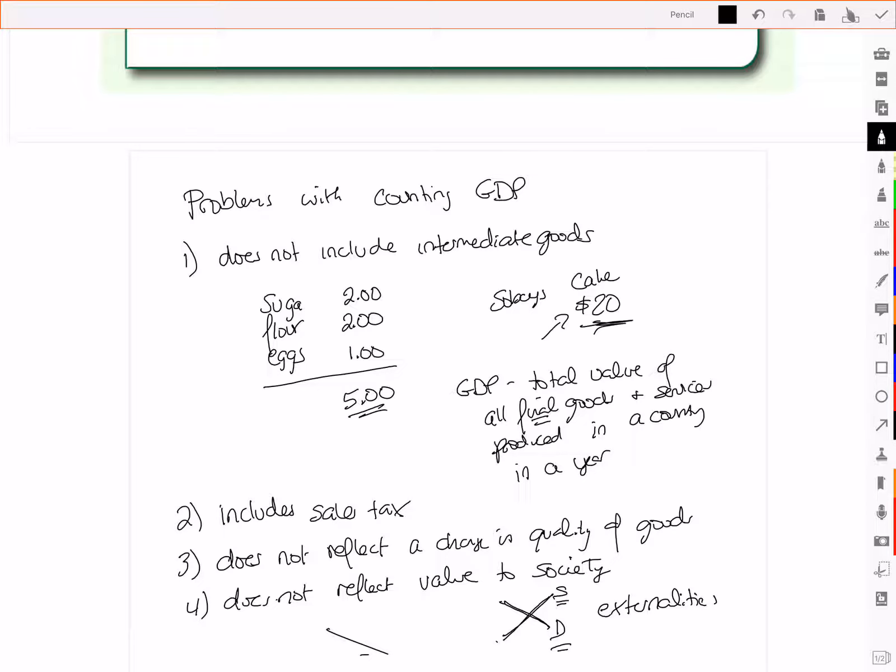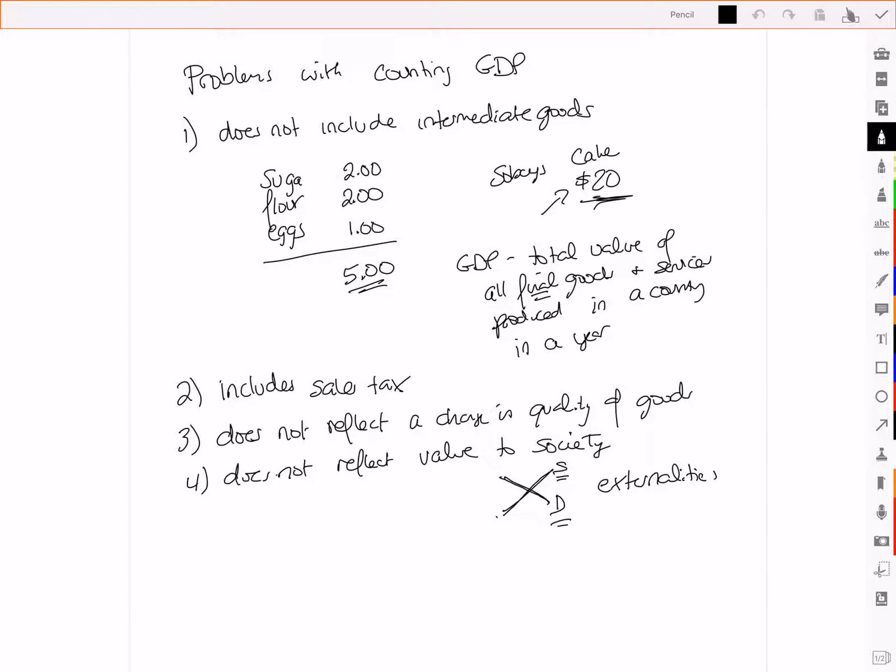Now, there are two other things that are problems with counting GDP. The fifth one here is that we care more about real GDP than nominal GDP. When we talk about the GDP of Canada being over $2 trillion, that's in nominal terms.